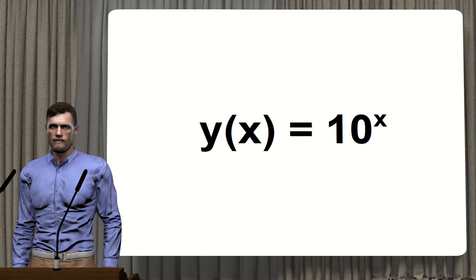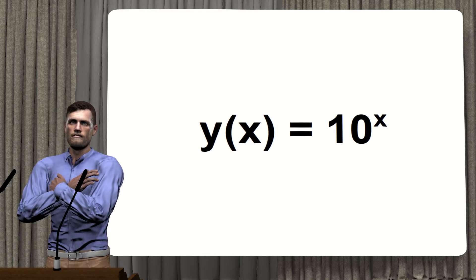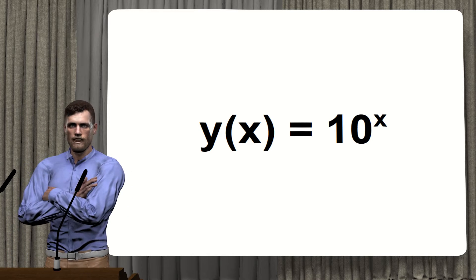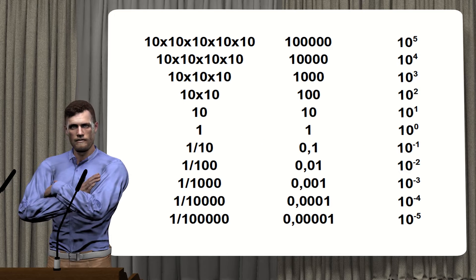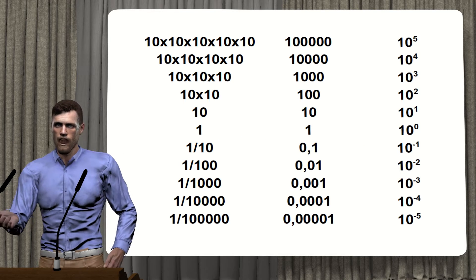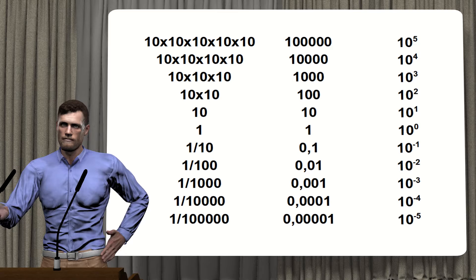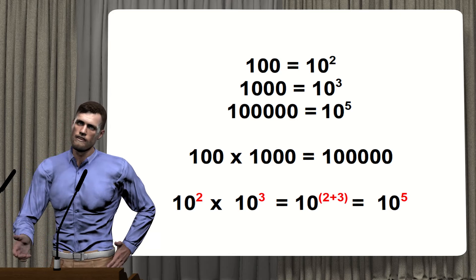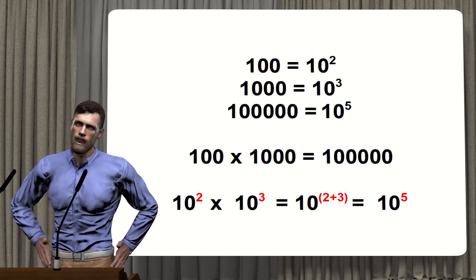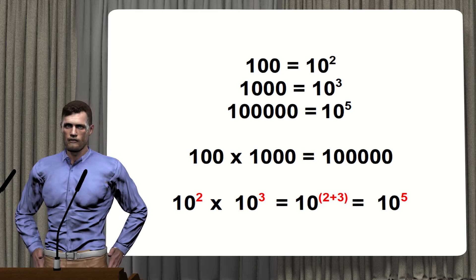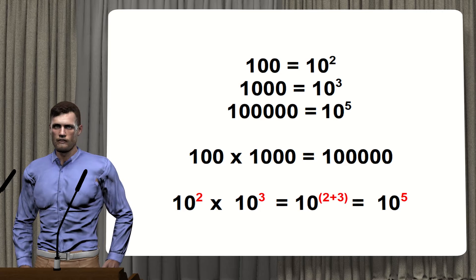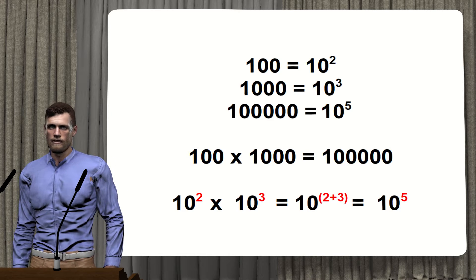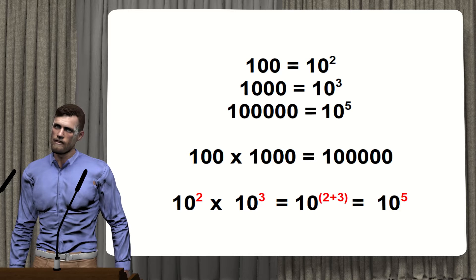We call this function a base 10 exponential function. We can do the same to obtain smaller and smaller numbers. If we multiply two numbers expressed in this way, we can obtain the result simply by adding the exponents, which converts a multiplication into a sum — always much easier to do. This is a property we will revisit when we talk about decibels.